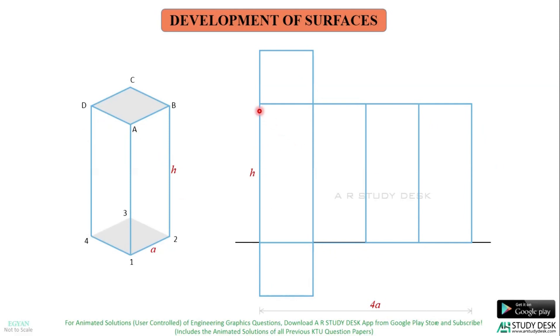This is called the full development of this square prism. Why? Because here, all the faces as well as the top and the base face is shown here. Suppose, if only the development of these faces are shown in this figure, then it is called the development of the lateral surface of this square prism. Now, you should name these corners.